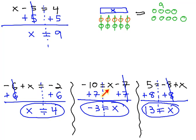In the middle equation, x, or negative 3, minus 7, is negative 10.